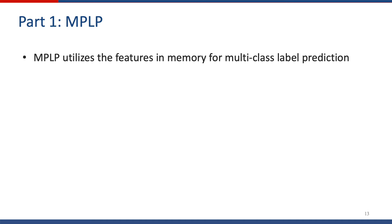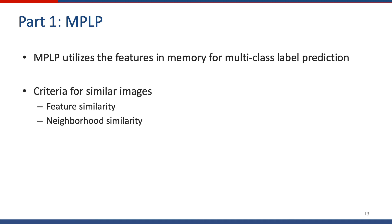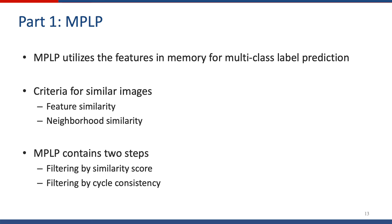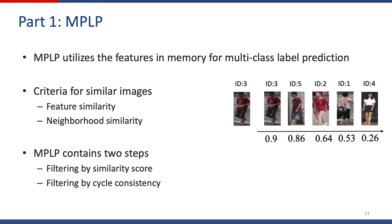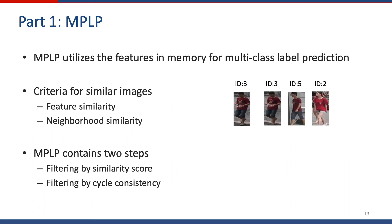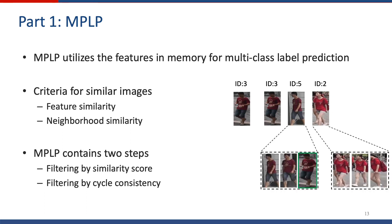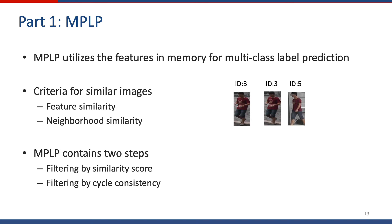For part one, MPLP utilizes the features in the memory for label prediction. We consider similar images in two aspects: feature similarity and neighborhood similarity. MPLP contains two steps: we rank images by similarity score, first removing low-similarity images, then checking each image by cycle consistency. Finally, we get the multi-class label according to the IDs of the remaining images.